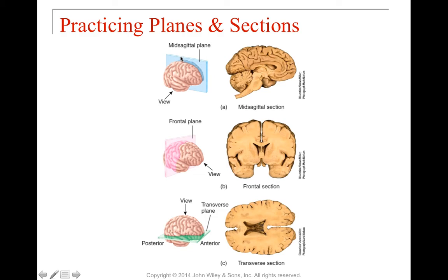Here's a mid-sagittal plane taken straight down the middle separating the left and right hemispheres. A frontal section separates the front from the rear of the brain. A transverse section separates the top from the bottom. Depending on which way you slice it, you get completely different images, so it's important to orient yourself before examining any sample so you know which direction to expect structures to appear.